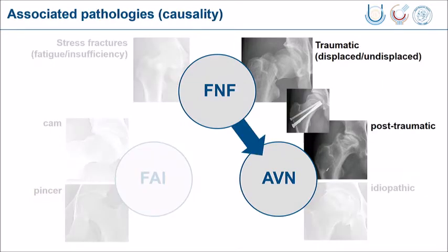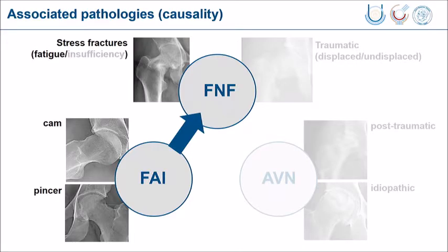For example, the traumatic hip femoral neck fracture which, in spite of reduction, can lead to post-traumatic avascular necrosis. This is very clear. More recently, we have also seen an association between impingement deformities and stress fractures of the femoral neck.